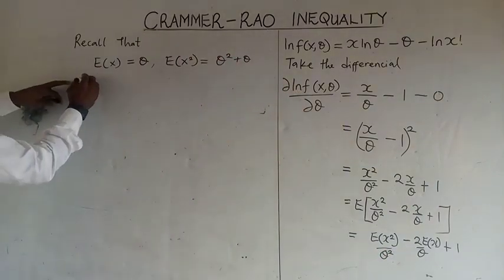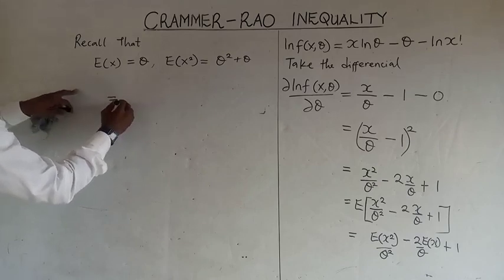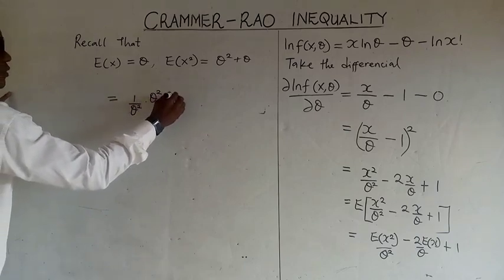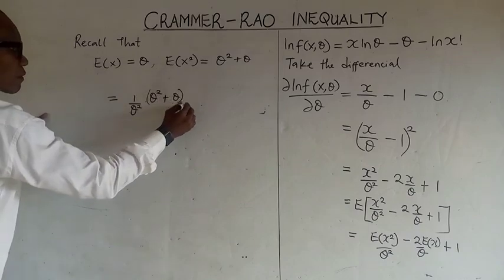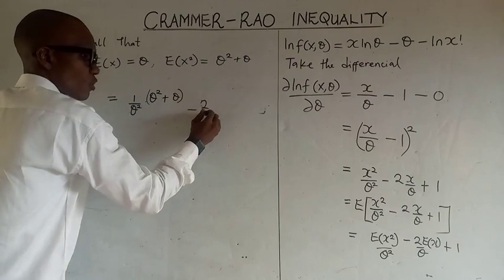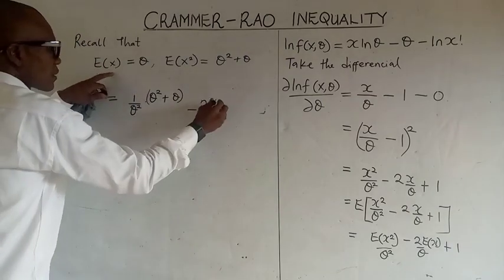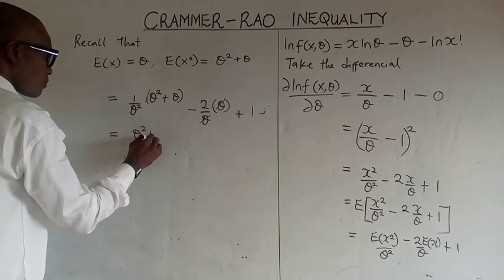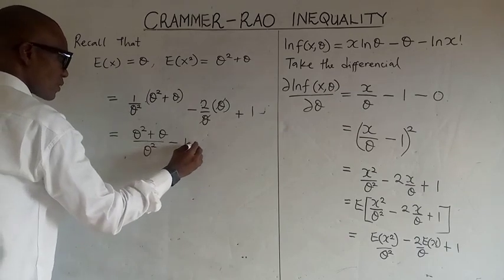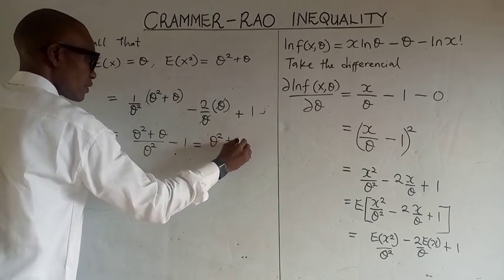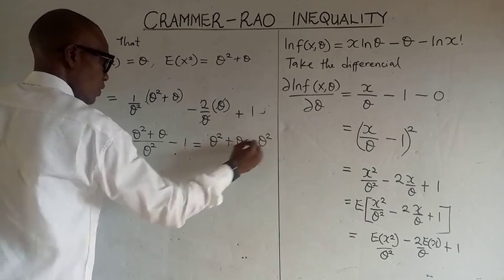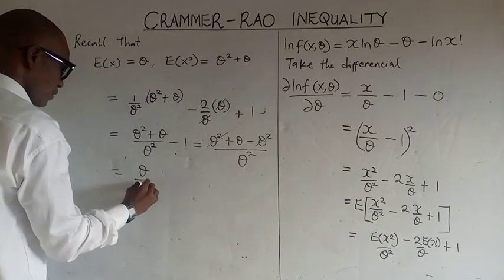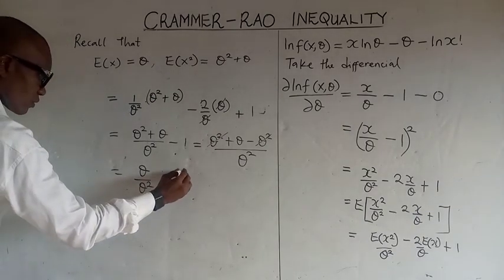We substitute into the expression. We have 1 over theta squared times the expected value of x squared — theta squared plus theta — minus 2 over theta times theta, plus 1. This simplifies: theta squared over theta squared cancels, leaving us with theta over theta squared, which we write as 1 over theta.